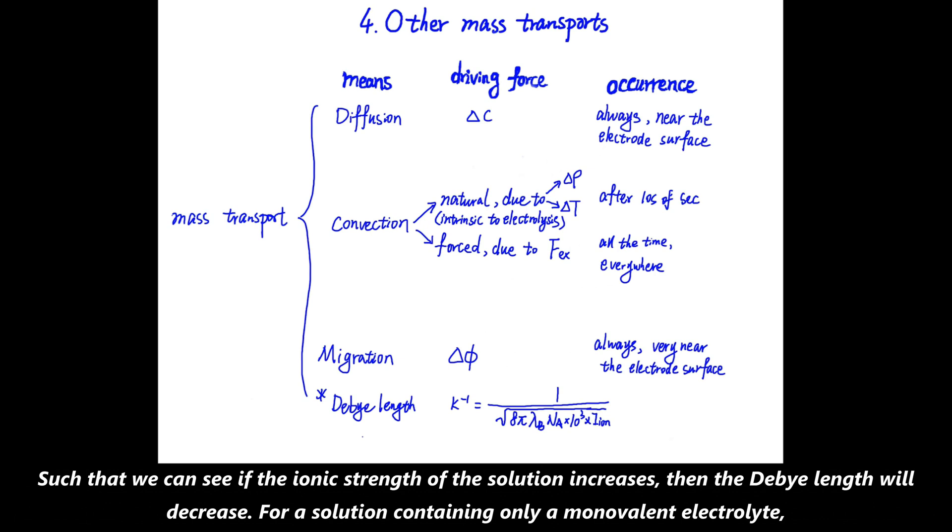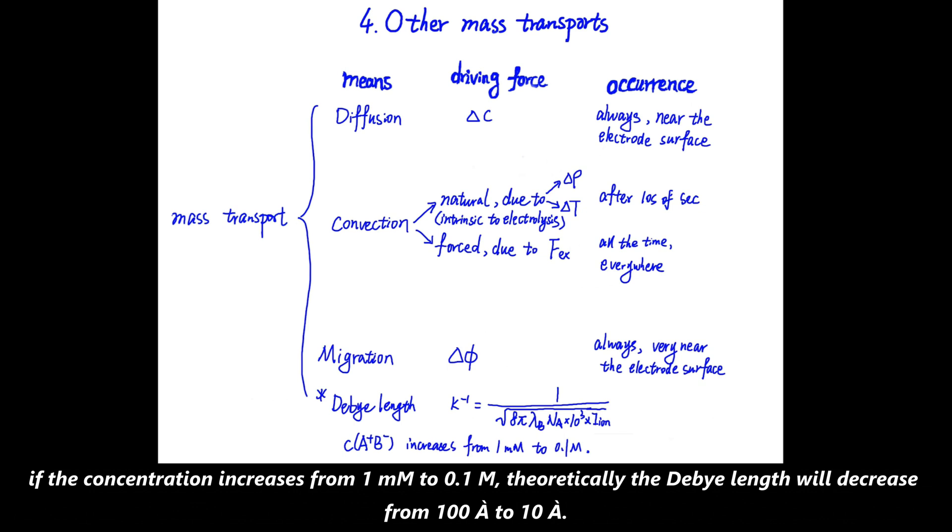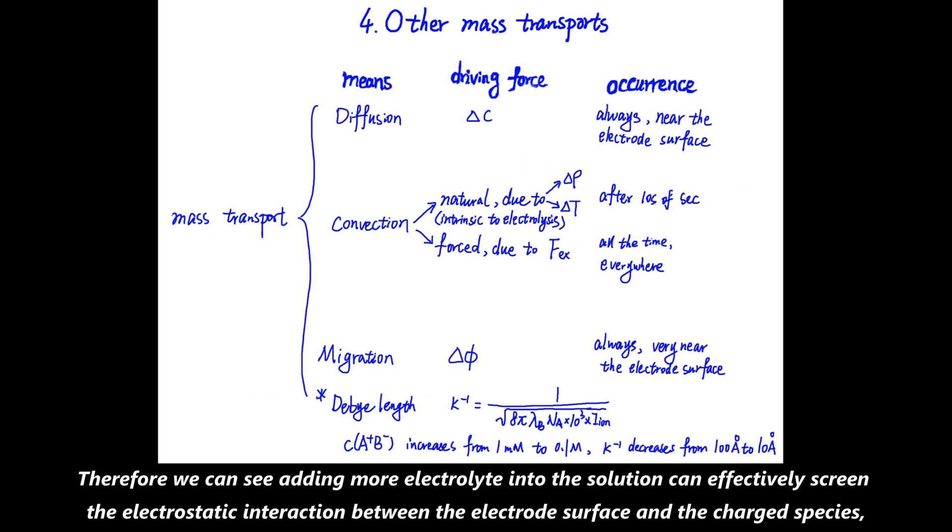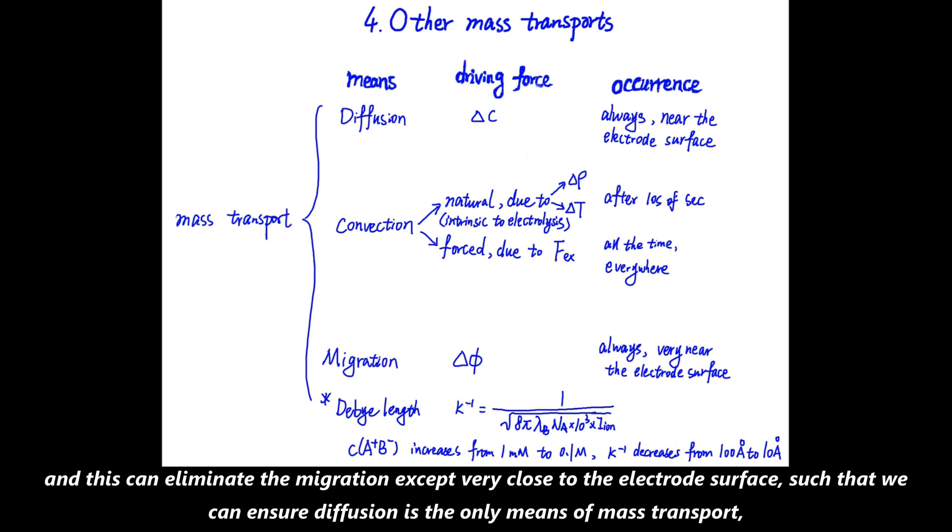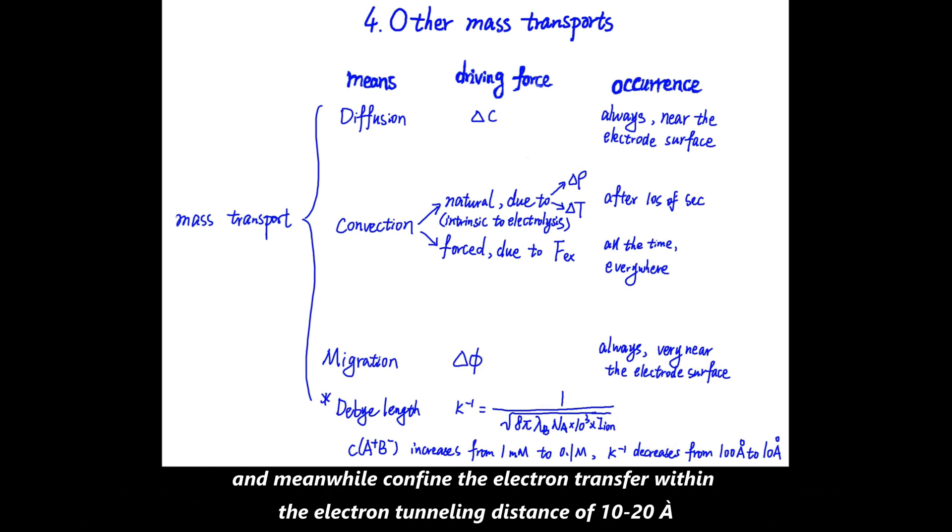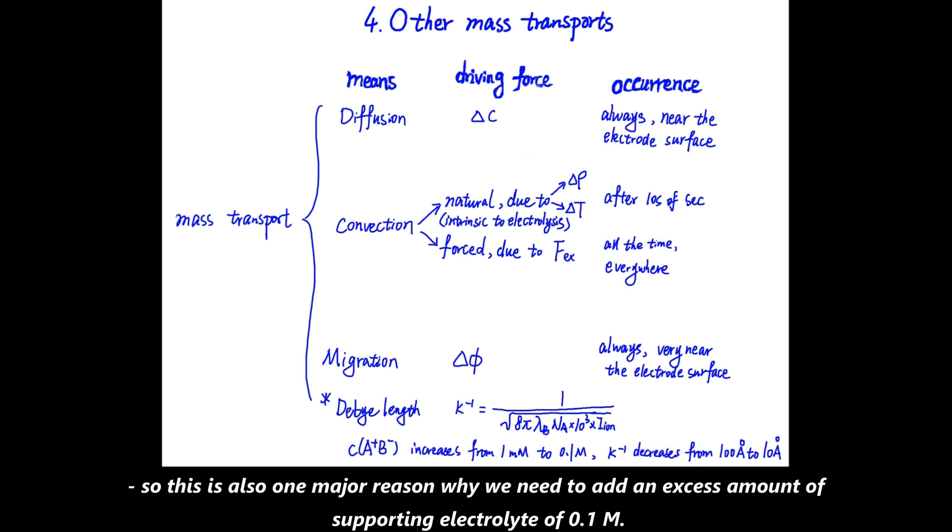Then for a solution containing only a monovalent electrolyte, if the concentration increases from 1 millimolar to 0.1 molar, theoretically the Debye length will decrease from 100 Angstroms to 10 Angstroms. Therefore, we can see adding more electrolyte into the solution can effectively screen the electrostatic interaction between the electrode surface and the charged species. And this can eliminate the migration except very close to the electrode surface, such that we can ensure diffusion is the only means of mass transport, and meanwhile to confine the electron transfer within the electron tunneling distance of 10 to 20 Angstroms. So this is also one major reason why we need to add an excess amount of supporting electrolyte of 0.1 molar.